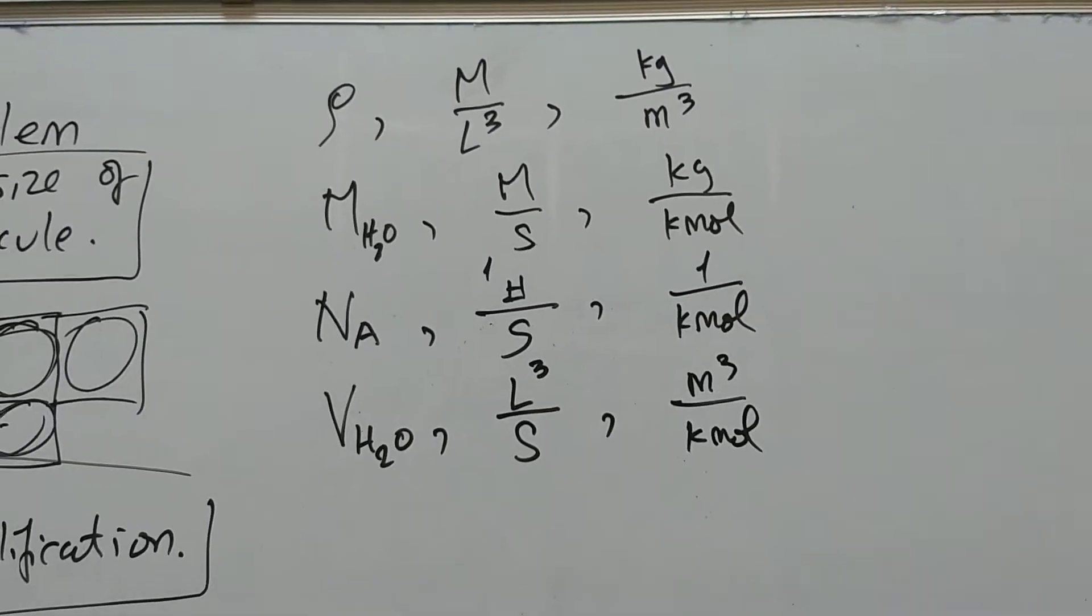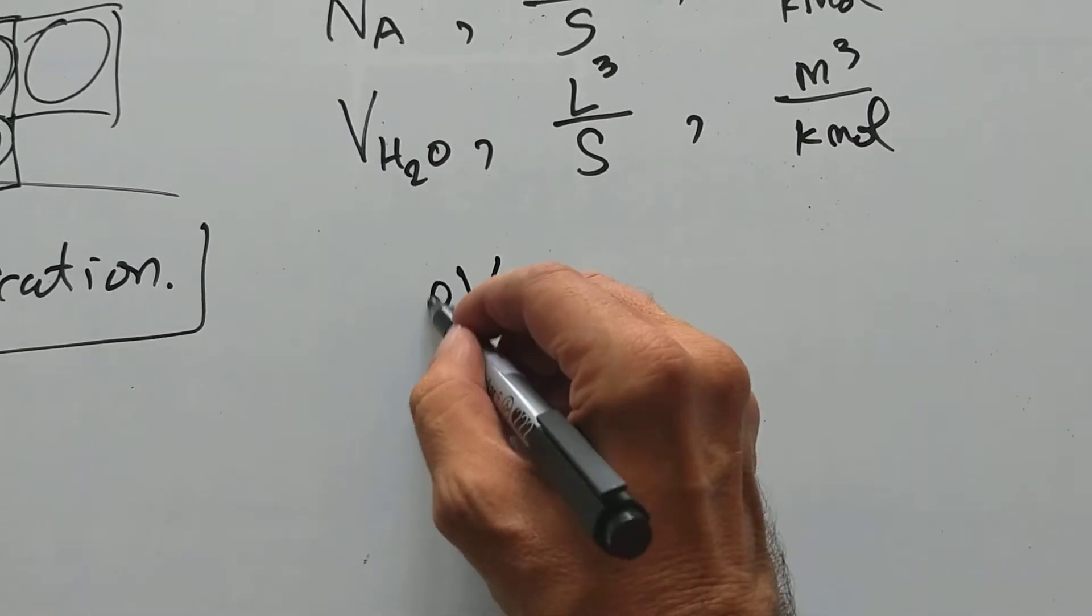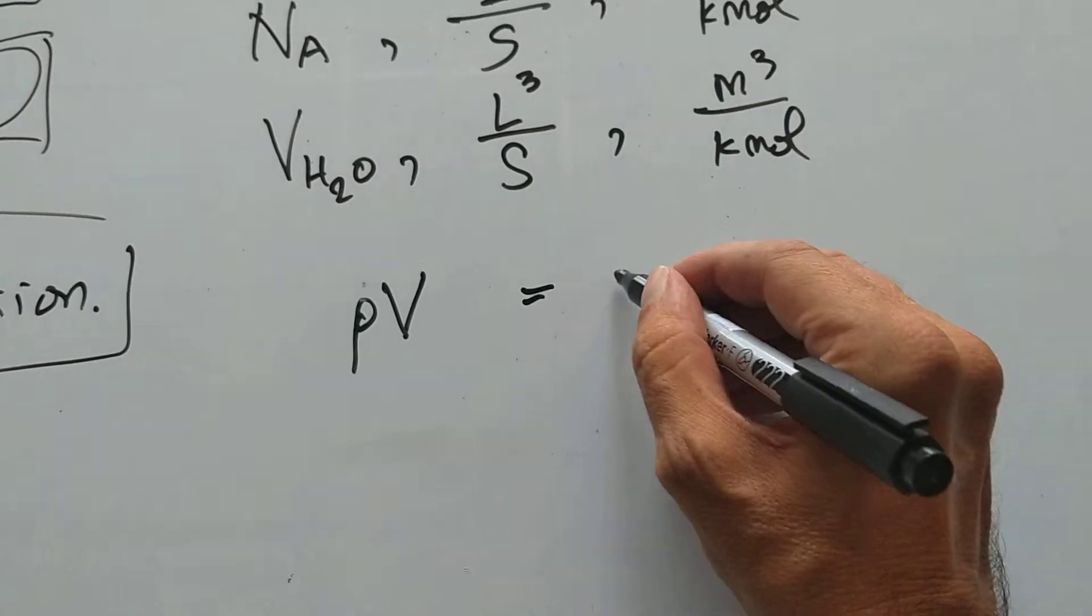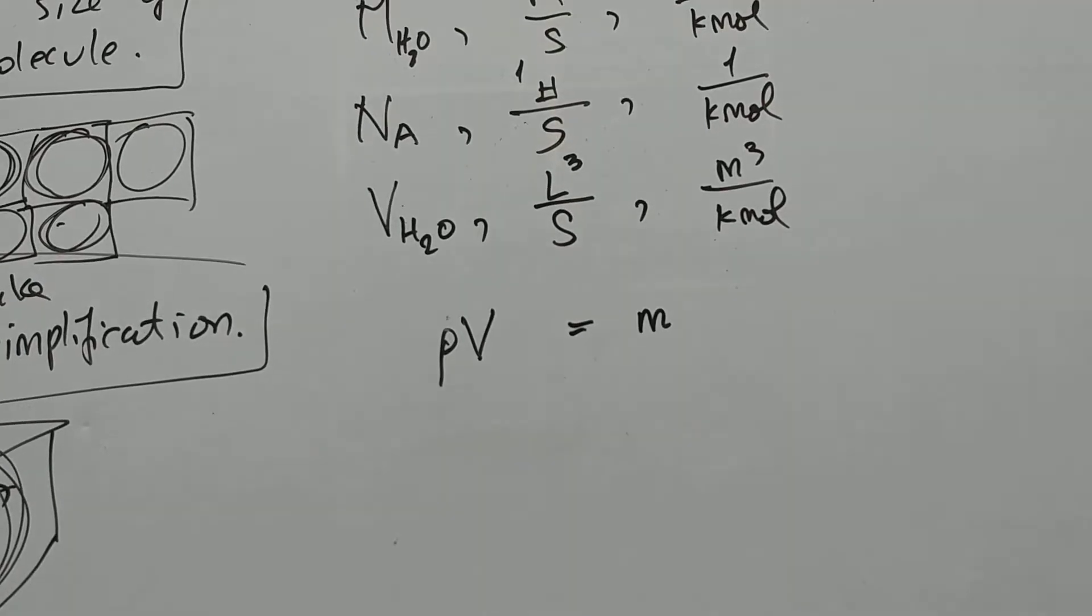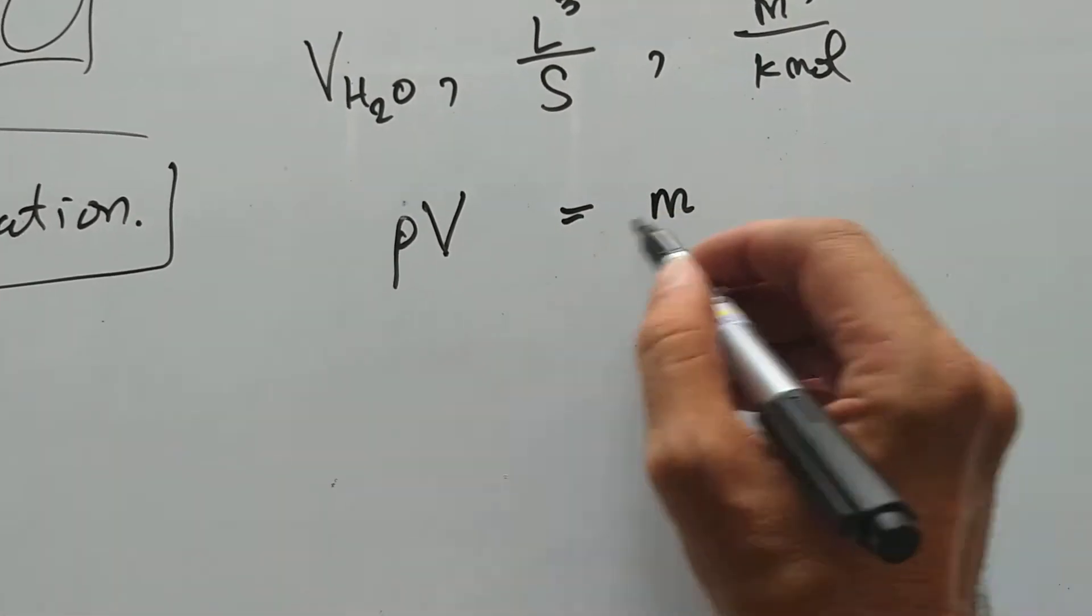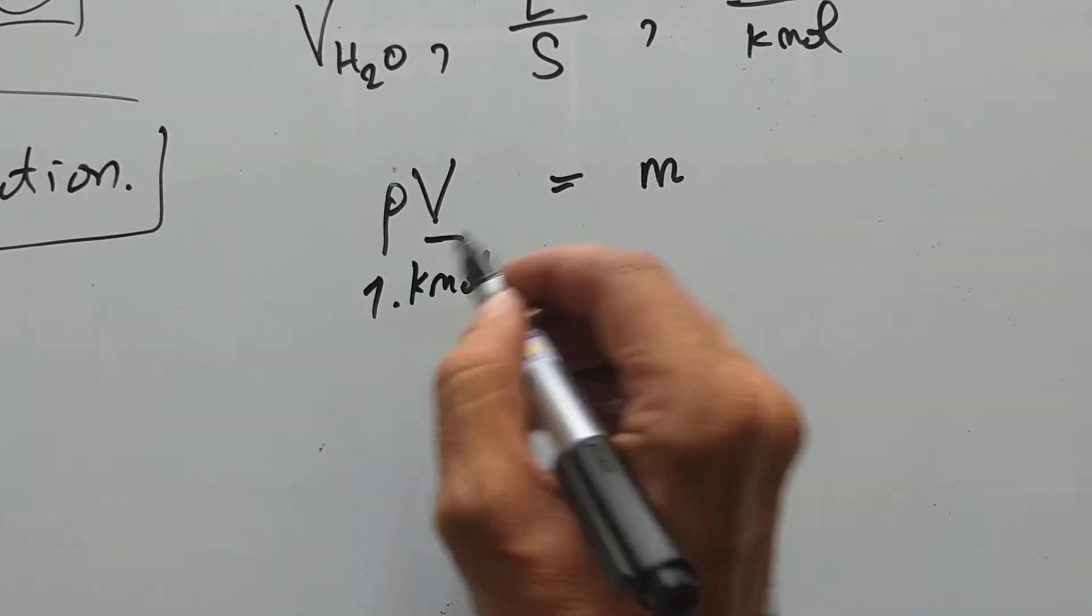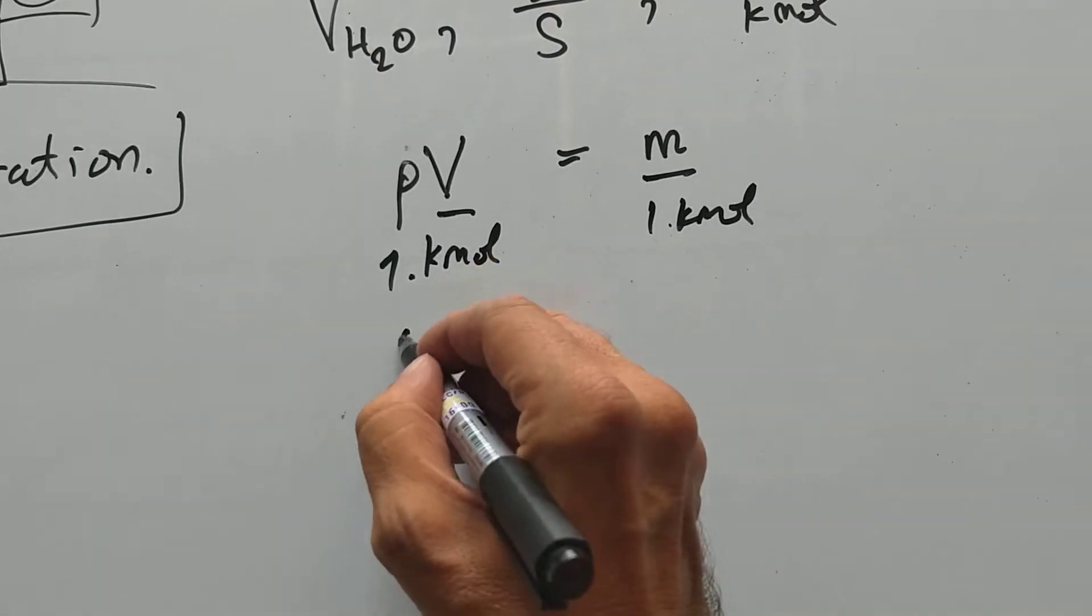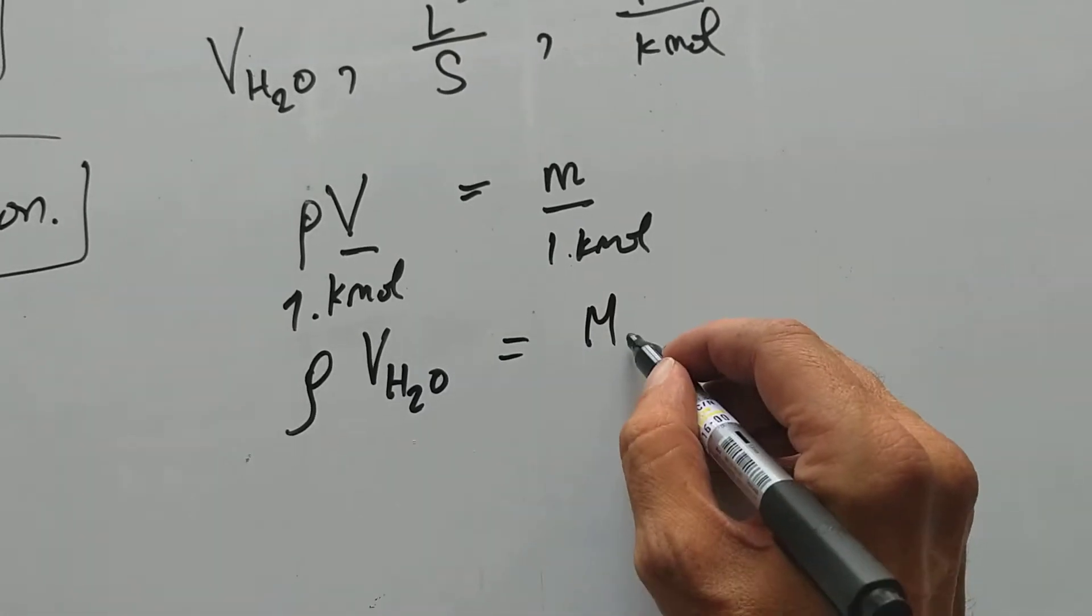Let's start with simple relationships. Volume times density is mass. We start with something really simple like this. Now, if I divide both sides by moles, kilomole, one kilomole, and here one kilomole. Now I get density times molar volume is molar mass.